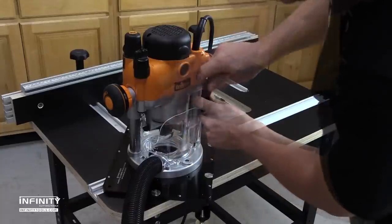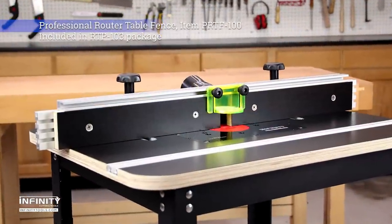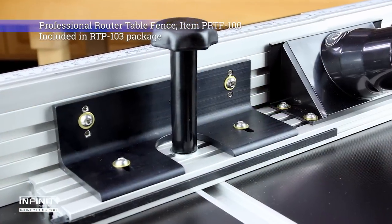The Infinity Professional Router Table Fence is made of anodized, heavy-wall extruded aluminum and stainless steel and brass hardware.